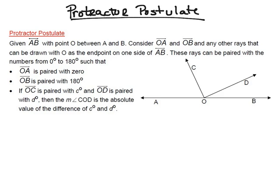If ray OC is paired with C degrees and ray OD is paired with D degrees, then the measure of angle COD is the absolute value of the difference of C degrees and D degrees.